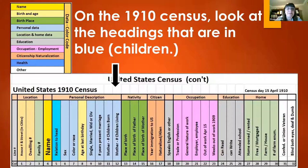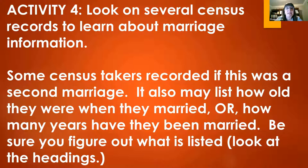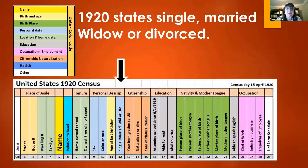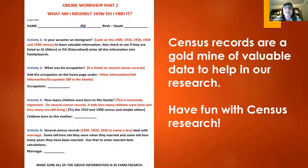The final activity for the week is to look at several census records and learn about marriage information. Some census takers reported if it was a second marriage; it may also list how old they were when married or how many years they've been married. Many times marriage records are difficult to find, but in 1920 it lists whether they're married, single, widowed, or divorced, so we can estimate when they got married. Census records are a goldmine of valuable data to help in our research.